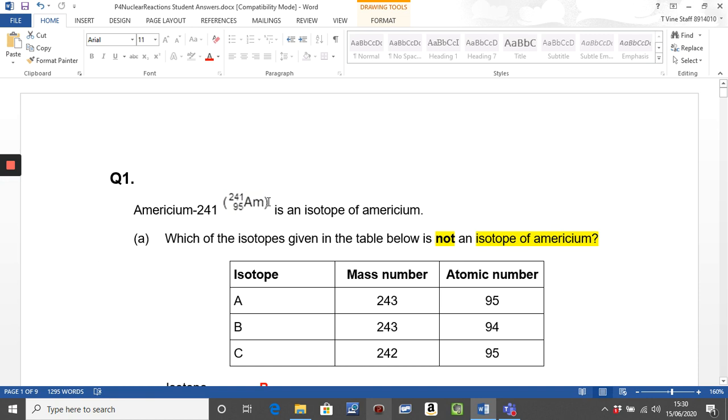So it's really important that you know what this nuclear symbol here is telling you and what this word isotope means. The idea of an isotope is it's atoms of the same element with the same atomic number but different mass numbers. When we look at this question it asks you which of the isotopes given in the table below is not an isotope of Americium. Americium has got an atomic number of 95. So we go to our table, only isotope B has a different atomic number and therefore cannot be an isotope.